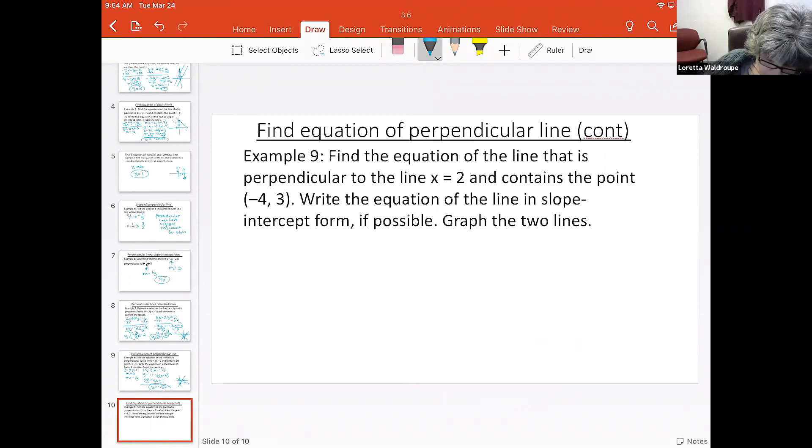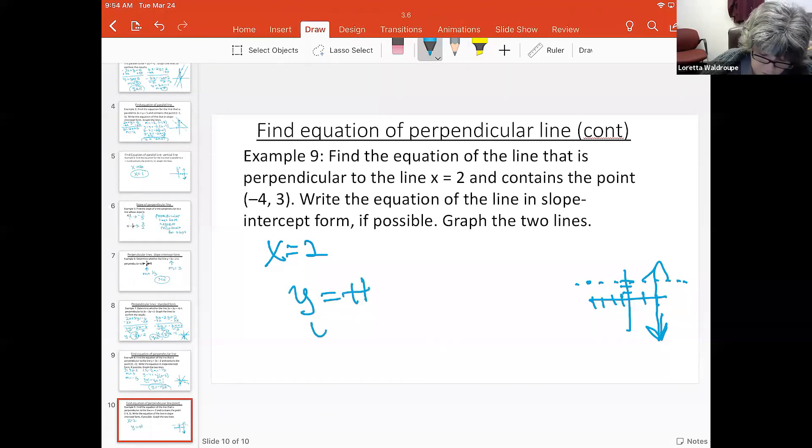If I have the line x equals two, let's go over here and look at it in a graph. That's a vertical line because it's x equals, and I have the point (-4, 3). What is the equation of that line? Well, if you look at that line, you can see it's a horizontal line, because horizontal and vertical lines are always perpendicular. The equation of a horizontal line is y equals a number, and if we look at our point, we know that y equals two is going to be the equation of that line.